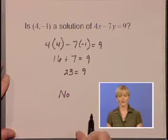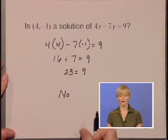The ordered pair of 4, negative 1 is not a solution of 4X minus 7Y equals 9.